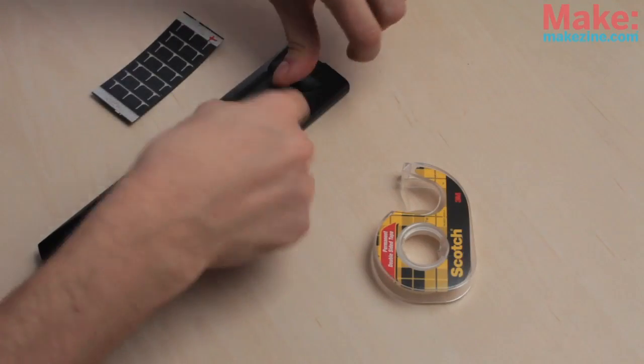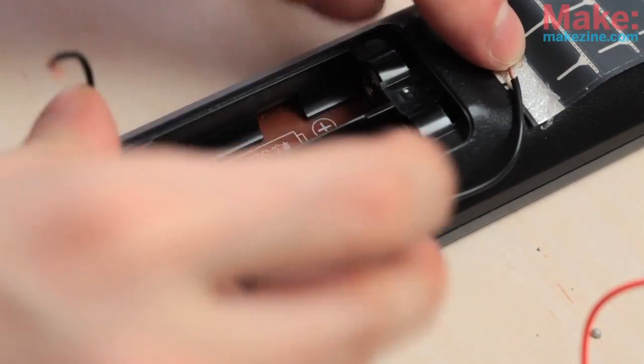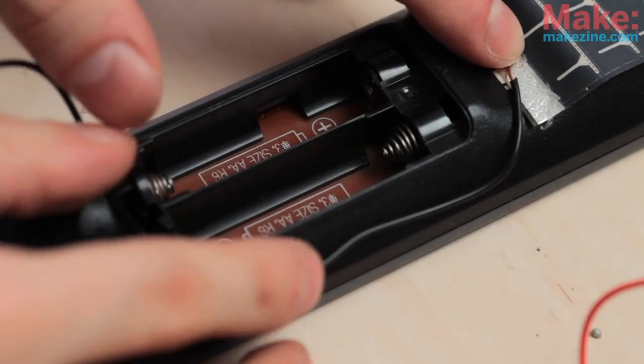Use the double-sided tape to connect the solar cell to the back of the remote control and measure out the amount of hookup wire you need to connect the solar cell's negative terminal to the battery compartment's negative terminal.